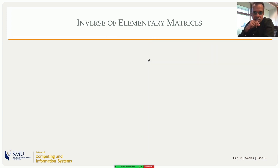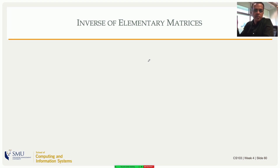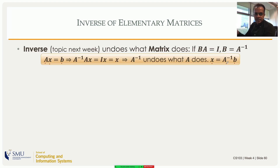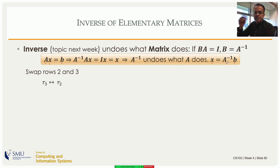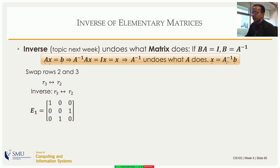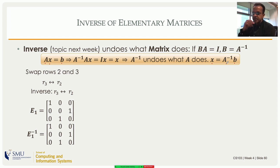Now let's think about inverses of elementary matrices. The inverse undoes what the matrix does — if A transforms x to b, then A-inverse transforms b back to x. For the swap operation (swapping rows two and three), the inverse is the same operation: swap again and you're back to the original. Such a matrix, where the inverse equals itself, is called an involutory matrix.